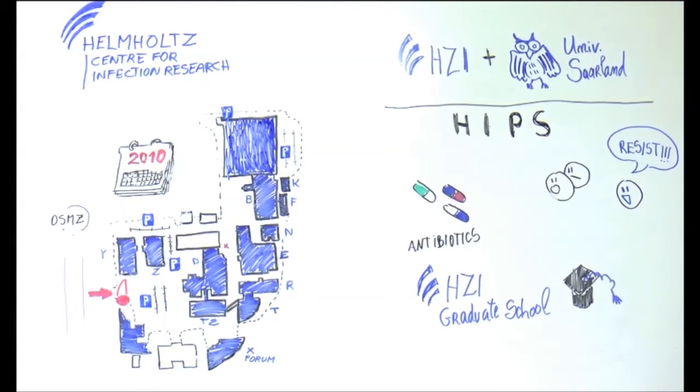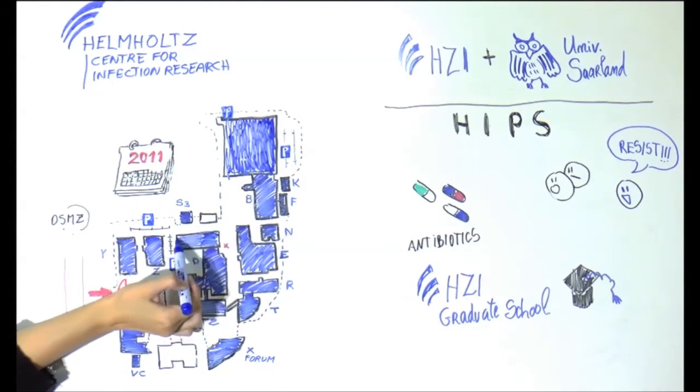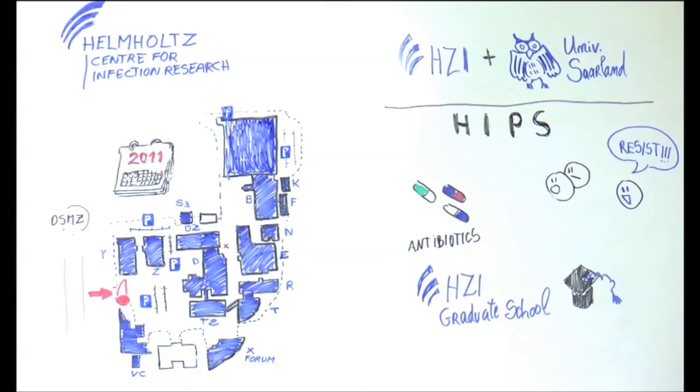In the last five years, the campus did not stop growing. BC Building is ready in 2010, and in the following year, the construction of the S3 lab facilities that allow scientists to work with highly virulent pathogens was accomplished, as well as the D2 Building, that comprises several offices and seminar rooms.